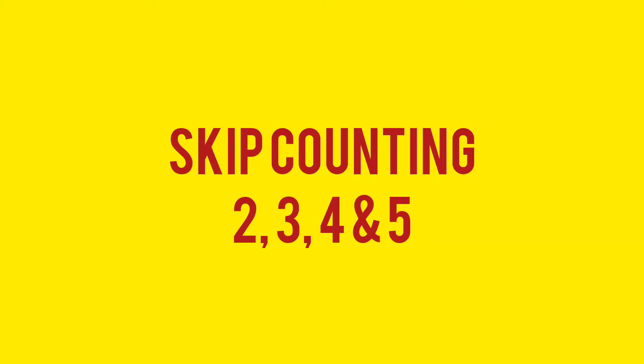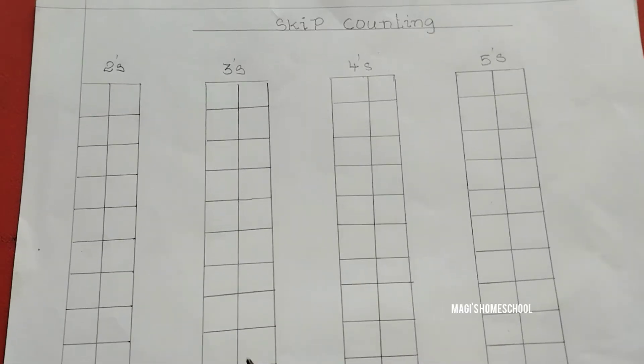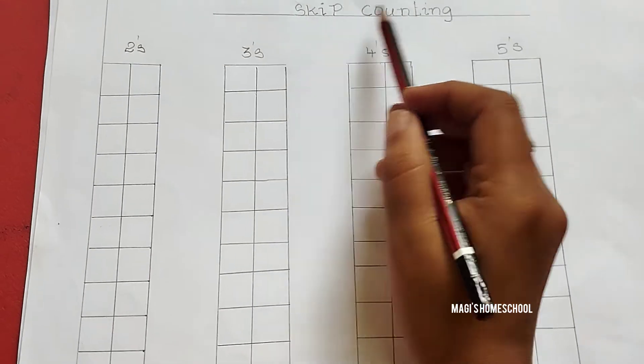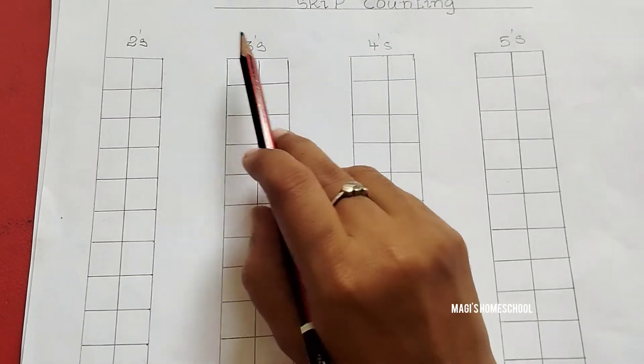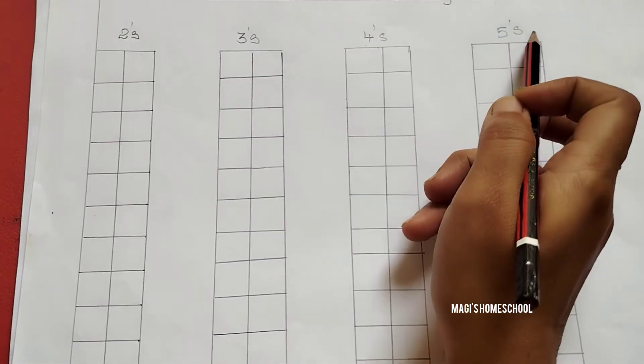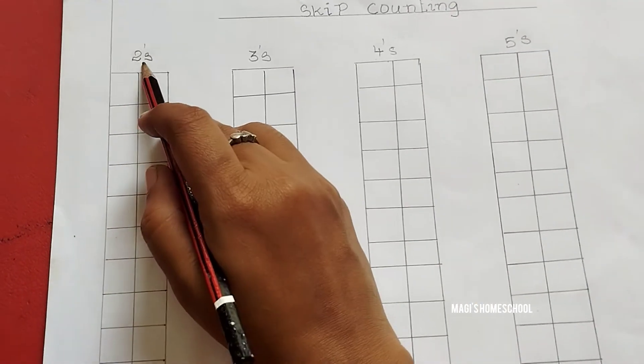Skip counting is counting number by adding a number every time to the previous number. It is an essential skill to learn when making the jump from counting to basic addition. Let's start with skip counting 2.